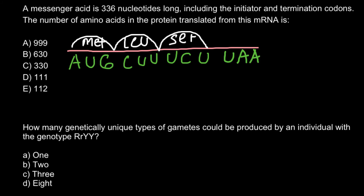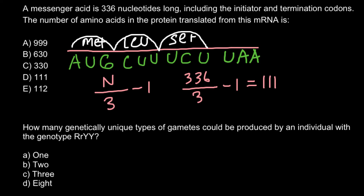Now we are ready to solve our problem. The formula is simple: number of nucleotides divided by 3 gives us the number of codons, minus 1 for the stop codon. So 336 divided by 3 equals 112 codons, and we subtract 1 for the stop codon, giving us 111 amino acids in the protein chain.